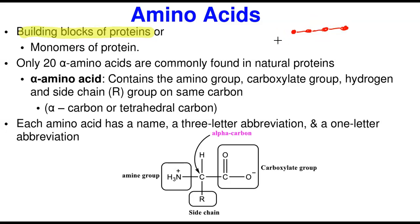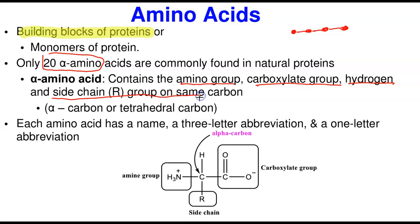There are only about 20 naturally occurring alpha amino acids. We call them alpha amino acids because they have an alpha carbon. An alpha carbon is a carbon that has the amino group, the carboxylic group, a hydrogen, and a side chain all connected on the same carbon. That is why it is a tetrahedral carbon.